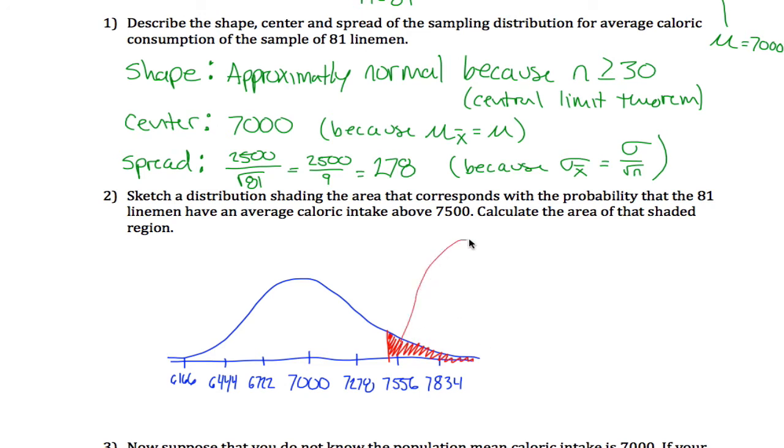We can get this area using normal CDF. Tell it our lower bound, which is 7,500. Our upper bound, just put in some very large number, you can use scientific notation. Our mean, 7,000. And our standard deviation, which is 278.